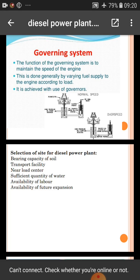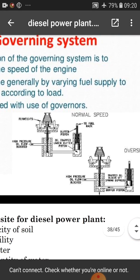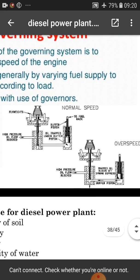Here we can see some photographs of the governing system. The components of the governing system include: the governor drive, high pressure oil flow block, buffer pistons, and oil trap under the buffer pistons.